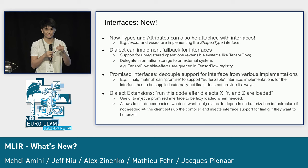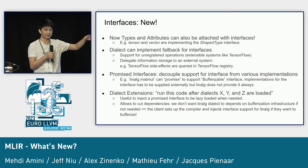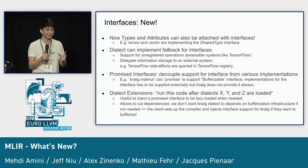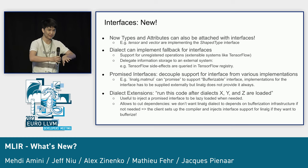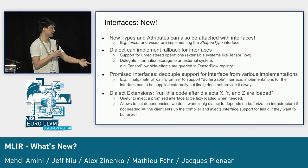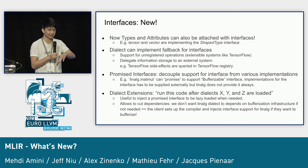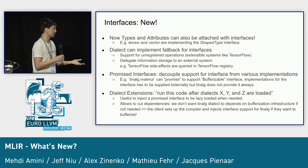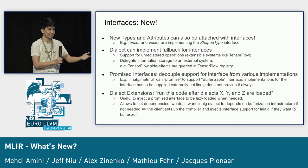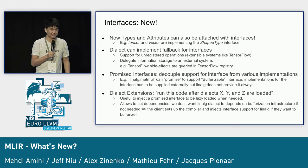Dialects can call external registries to get interface implementation details — for example, the TensorFlow dialect can use the TensorFlow op registry to get side effects of an operation. We also have promise interfaces, where an operation declares it will have an implementation for an interface but lets someone else provide it, which separates dependencies nicely. One example is dialect extensions, which can inject promise interfaces for bufferization, cutting dependencies like preventing the Linalg dialect from depending on the full bufferization infrastructure. Extensions can also add operations, types, and attributes to dialects — that's how the transform dialect works as well.